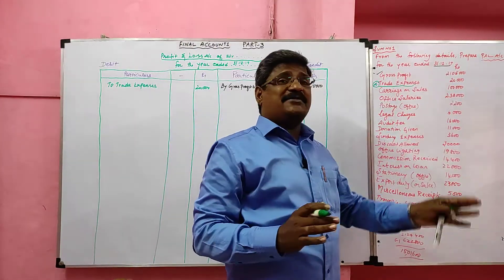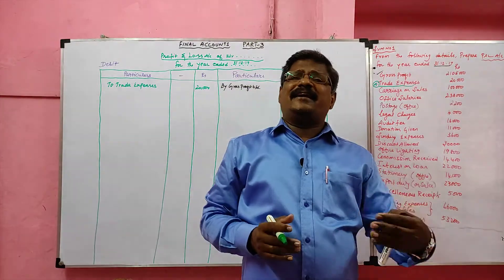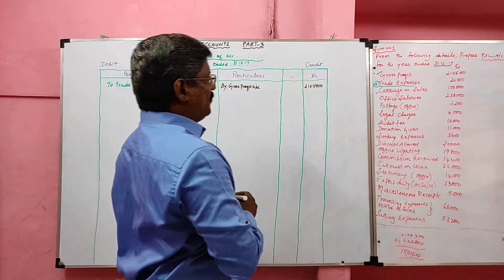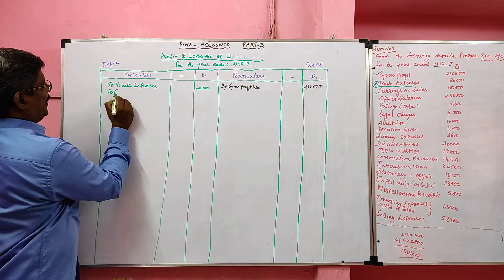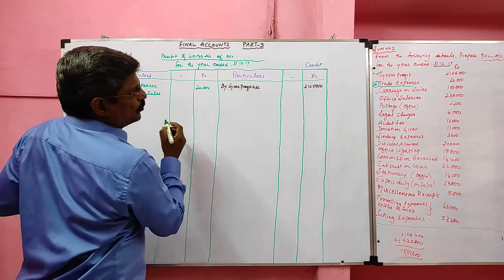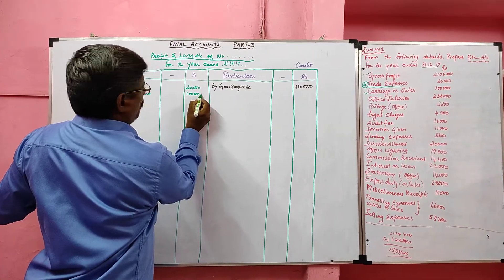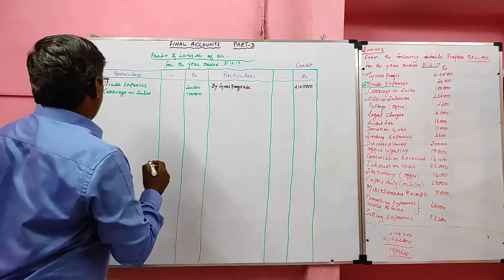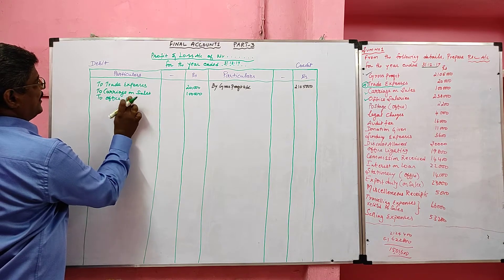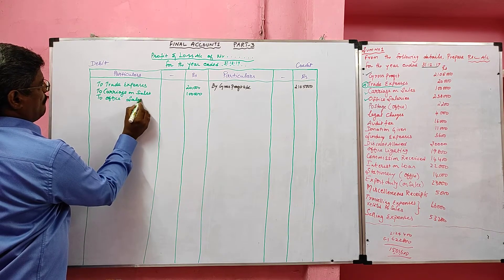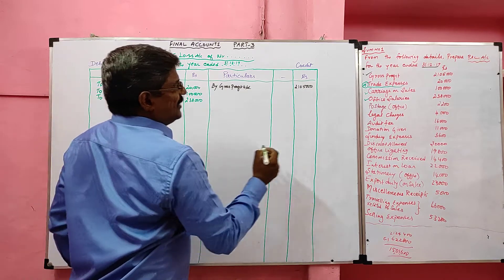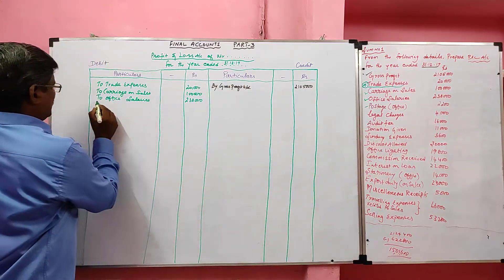Sometimes trade expenses and office expenses are both given — in that case, trade expenses are debited to the trading account. Next, carriage on sales is debited to the profit and loss account, value 1 lakh rupees. Next, office salaries are debited to the profit and loss account, value 2 lakh 38,000 rupees. Next, postage, which is an office and indirect expense.